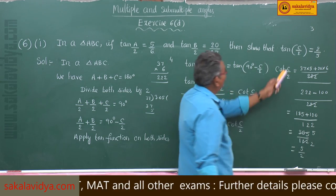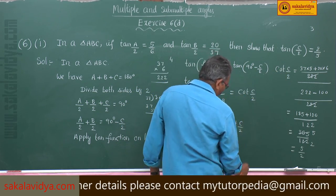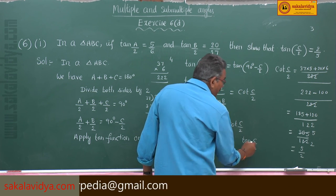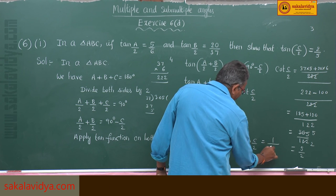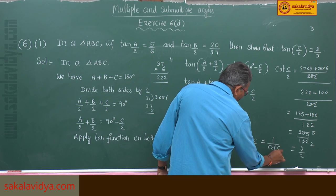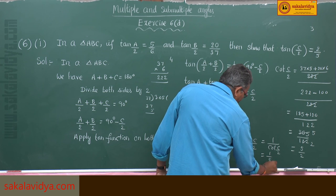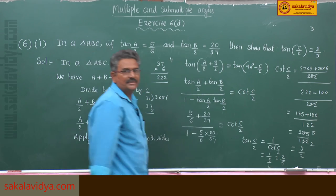But we require tan C by 2, but we know cot C by 2. So tan C by 2 is equal to reciprocal of cot, that is 1 by cot C by 2. 1 by 5 by 2, that is equal to 2 by 5, this is the concept.